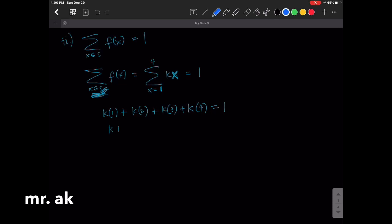This is k plus 2k plus 3k plus 4k equals 1. We add all these things on the left side. That is 10k equals to 1. And so therefore, k is equal to 1 over 10. We now solve for k.